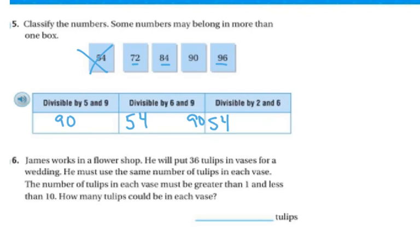90 can also go into 6 and 9 because it's divisible by both. And 90 can, nope, that's it. That's all 90 can do. 72 can go into, it's divisible by 6 and 9. It is also divisible by 2 and 6. And then 84, 84 is not divisible by 6 and 9. But it is divisible by 2 and 6. And then finally 96 is not divisible by 9 and 6. But it is divisible by 2 and 6.